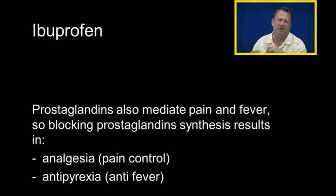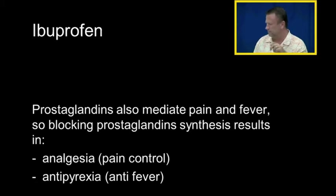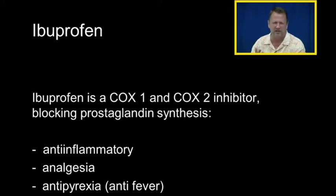Prostaglandins are also involved in pain and fever in the central nervous system. By blocking prostaglandin synthesis, we can get analgesia — which is pain control — and antipyrexia, meaning anti-fever (pyro meaning pyre). So ibuprofen is a COX-1 and COX-2 inhibitor that blocks prostaglandin synthesis, giving it anti-inflammatory, analgesic, and antipyretic properties.